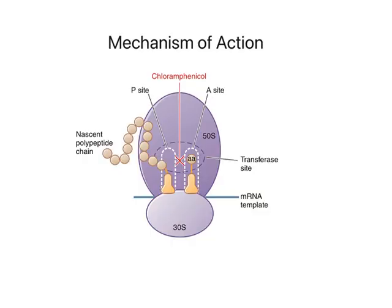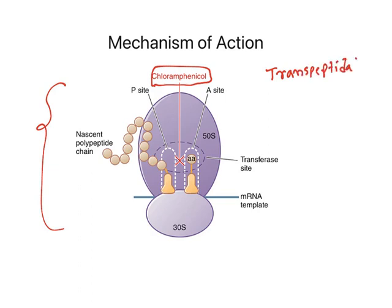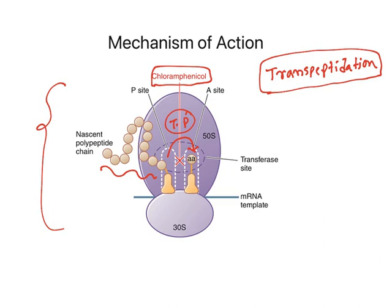Moving further, when you see the mechanism of action — this is the typical bacterial protein synthesis machinery — chloramphenicol inhibits a step known as transpeptidation. Transpeptidation is the step in which the growing amino acids form a peptide bond to the incoming amino acid. This step is inhibited by chloramphenicol. When transpeptidation is inhibited, protein synthesis is inhibited and this is how it acts as a bacteriostatic agent.